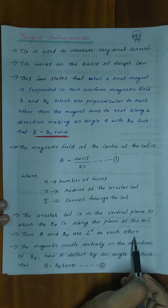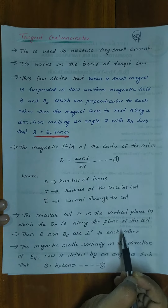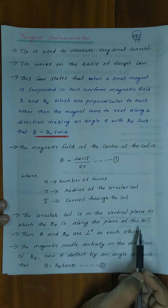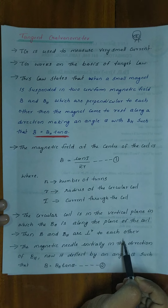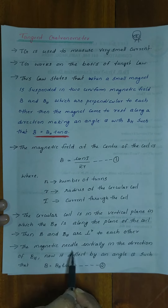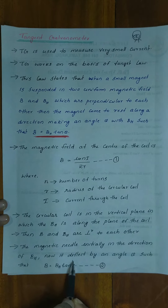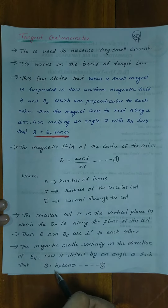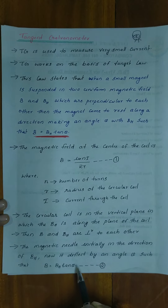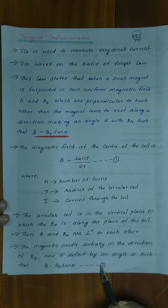The current-produced magnetic field B and the earth's horizontal component BH are mutually perpendicular. The magnetic needle, initially in the direction of BH, is now deflected by an angle theta such that B is equal to BH tan theta. The current passes through the coil producing a magnetic field in the earth's horizontal magnetic field.